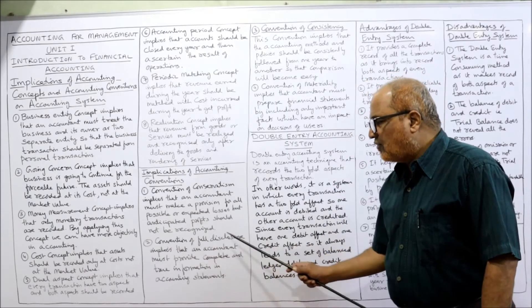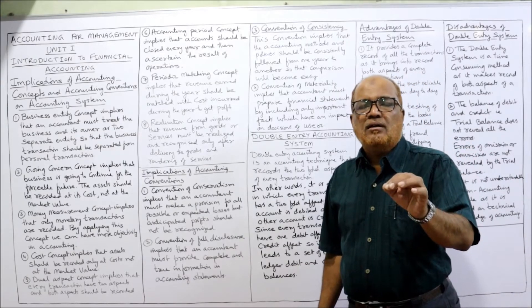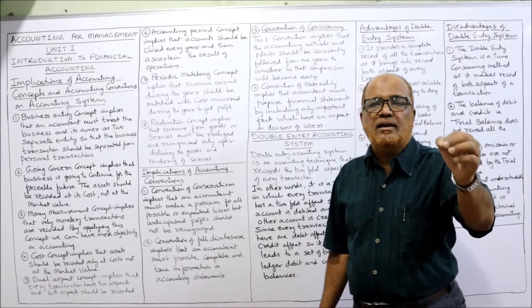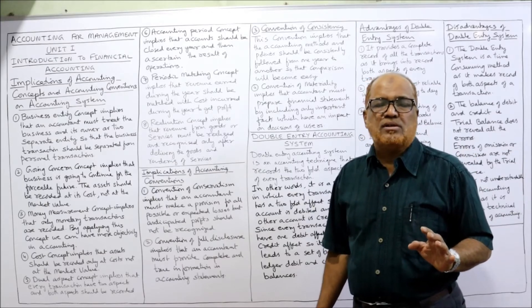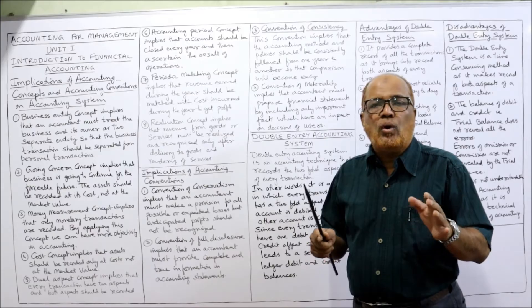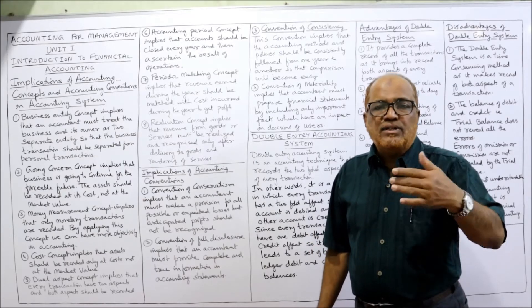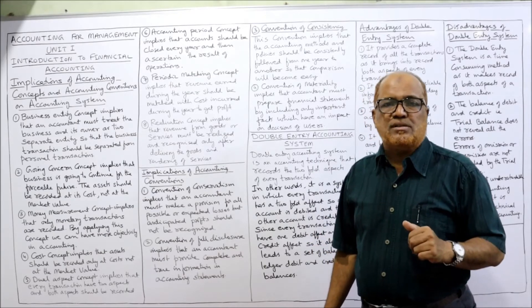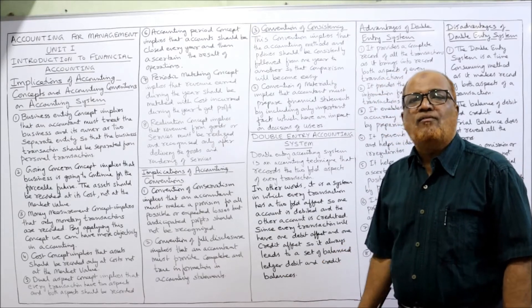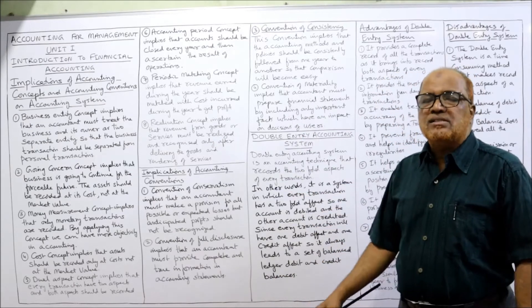The convention of full disclosure implies that every transaction and every event should be clearly disclosed in the financial statements. The financial statements should present a true and fair view of the activities of the business. That is the implication of following the full disclosure convention.